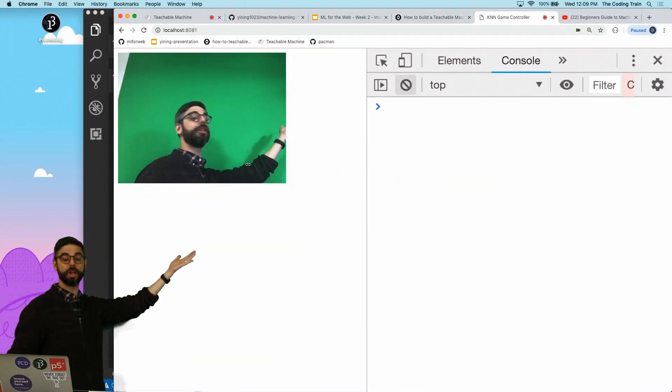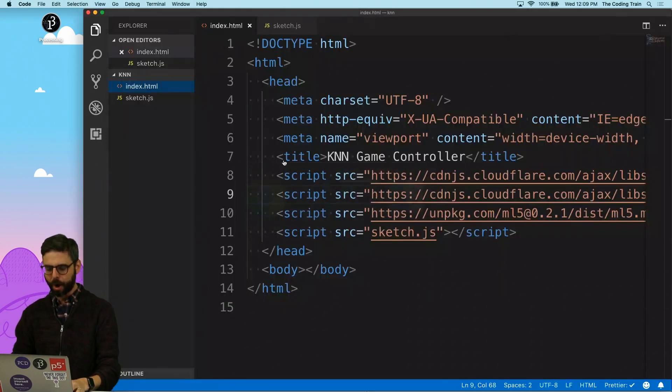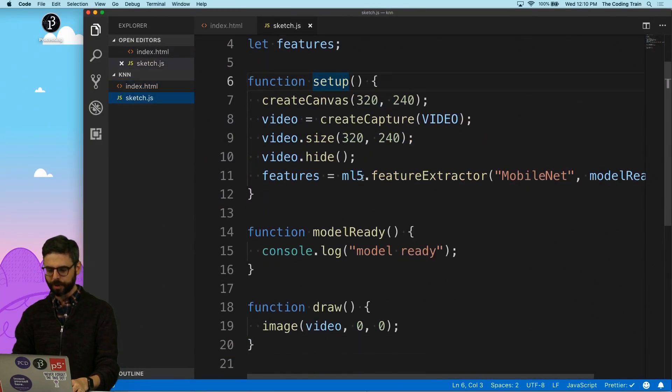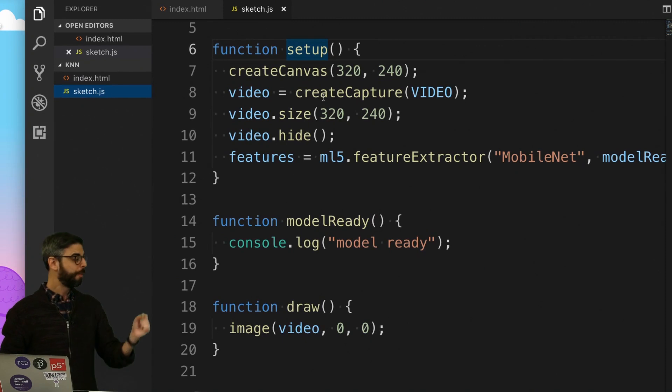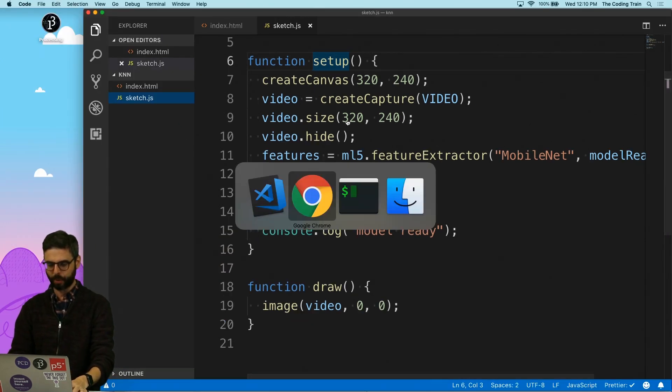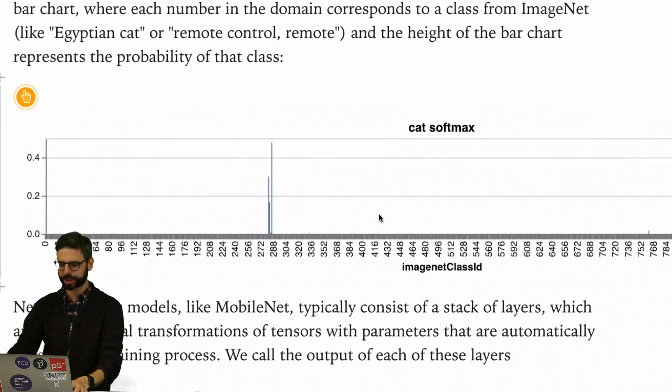I have a reference to the ML5 library, and I also have this feature extractor loaded. I'm using P5, I'm connecting to the webcam, using the P5 library to connect to the webcam and draw the webcam's image, and then I'm using ML5 to create a feature extractor with the MobileNet model.